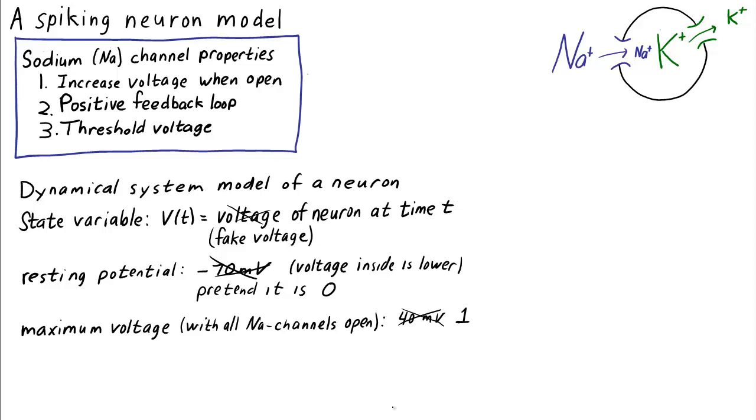There's one more voltage we need to add to our model, the threshold voltage. It is somewhere between the resting potential and the maximum voltage. In real life, it's much closer to the resting potential. Let's leave it as an unspecified parameter and call the threshold voltage A.